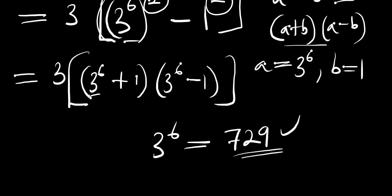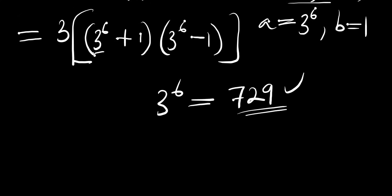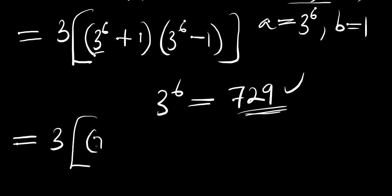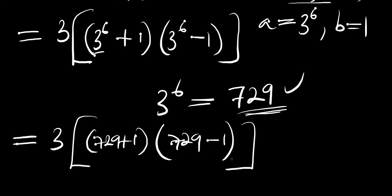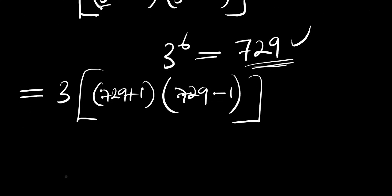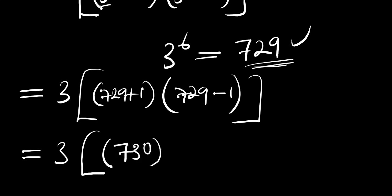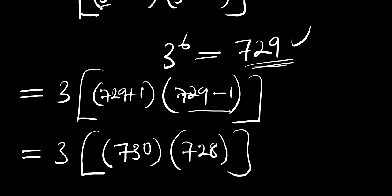We replace 3^6 with 729. So we have 3 times (729 + 1) times (729 - 1), which gives us 3 times 730 times 728.